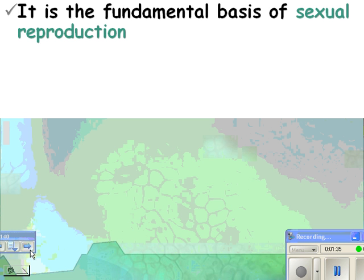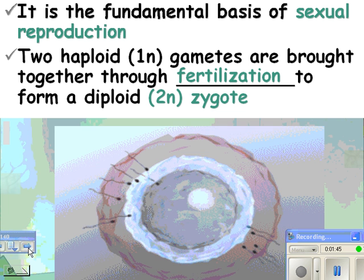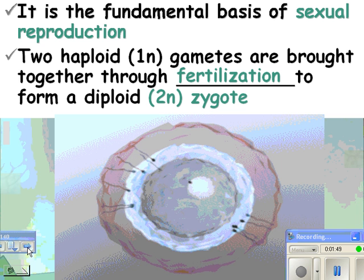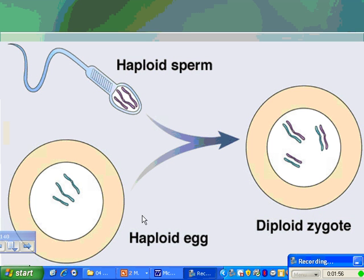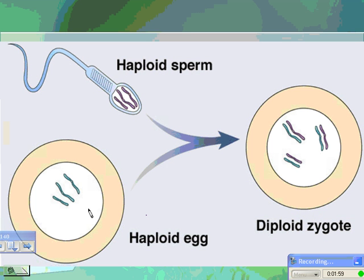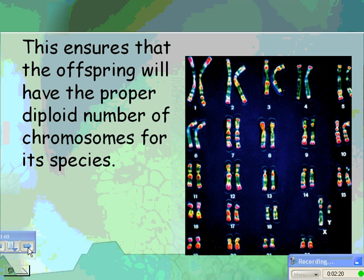So meiosis is a fundamental basis of sexual reproduction. Two haploid gametes are brought together through fertilization to form a diploid zygote. You have a haploid egg and a haploid sperm together making a diploid zygote. With this picture, for some species, the haploid number is three chromosomes, and the diploid number, once the zygote is formed, is 2N equals six chromosomes. So N is 3, and 2N is 6.